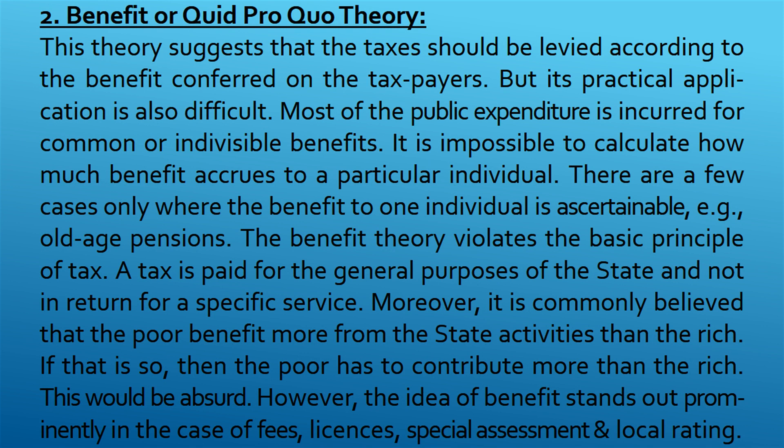Benefit or Quid Pro Quo Theory. This theory suggests that taxes should be levied according to the benefit conferred on the taxpayers. But its practical application is also difficult. Most of the public expenditure is incurred for common or indivisible benefits. It is impossible to calculate how much benefit accrues to a particular individual. There are a few cases only where the benefit to one individual is ascertainable, for example, old-age pensions.